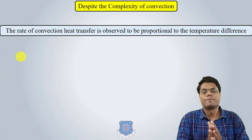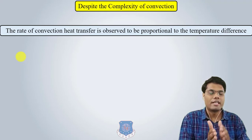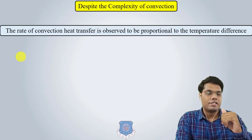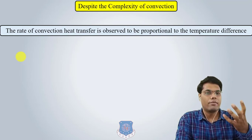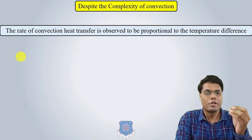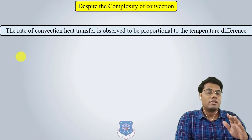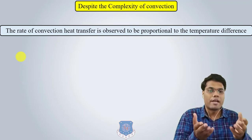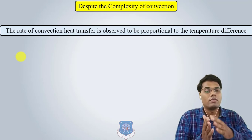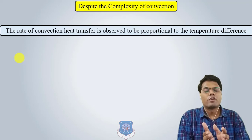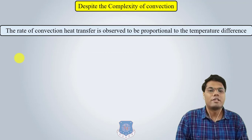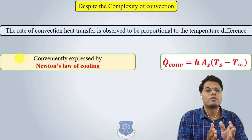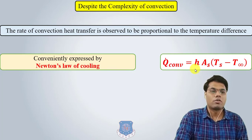Despite the complexity of convection — where conduction uses the simple Fourier equation q = −k·dT/dx and radiation uses the Stefan-Boltzmann constant — convection is more complex because it depends on various fluid properties. Nevertheless, the rate of convection heat transfer is observed to be proportional to the temperature difference, and is conveniently expressed by Newton's law of cooling: q_convection = h·A·ΔT.